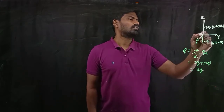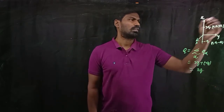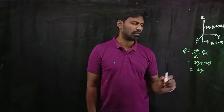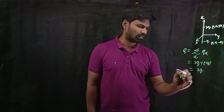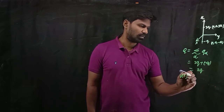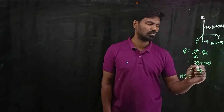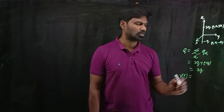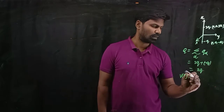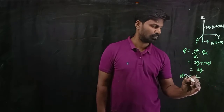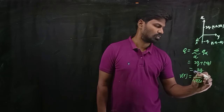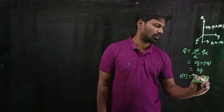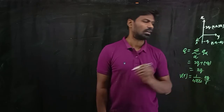Therefore, the potential at a large distance R due to the monopole is given by V(R) = (1 / 4πε₀) × (2Q / R). This is the expression for monopole moment and its corresponding potential.